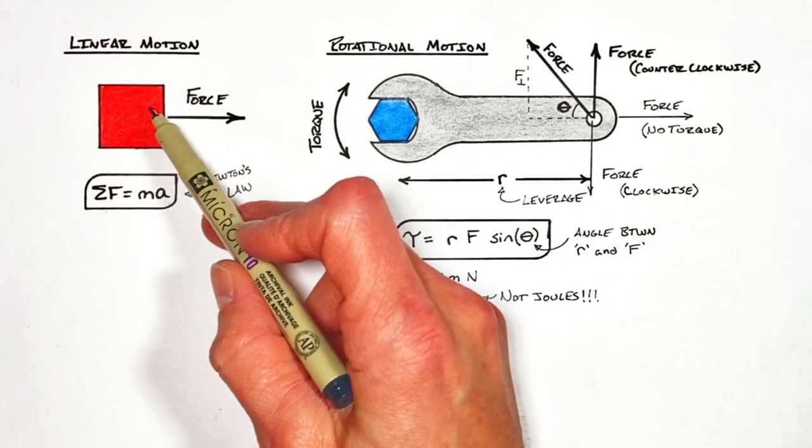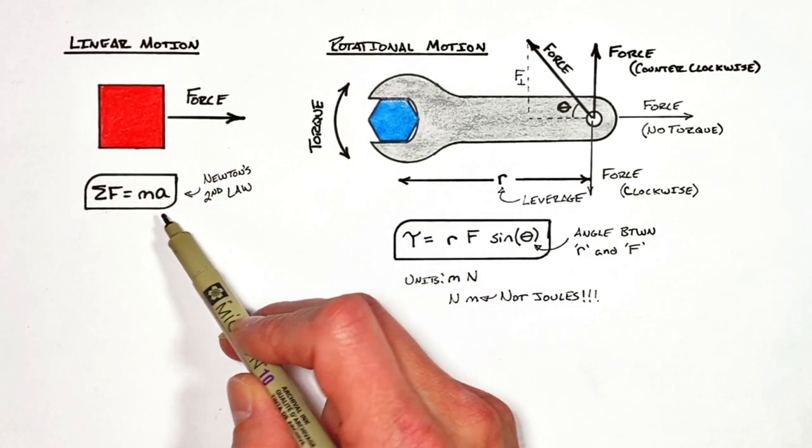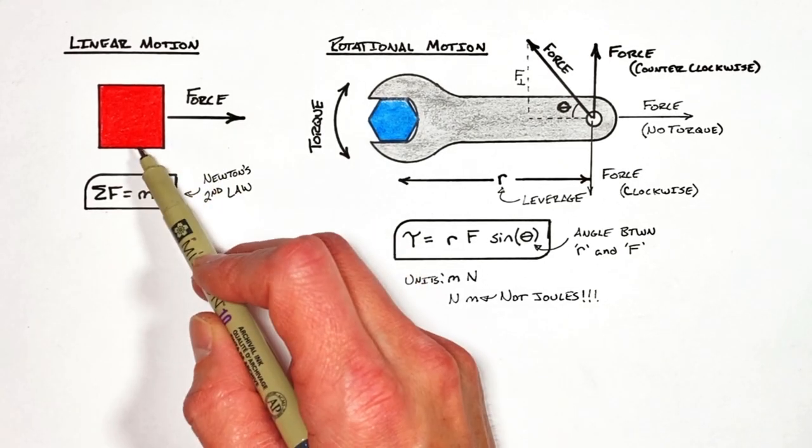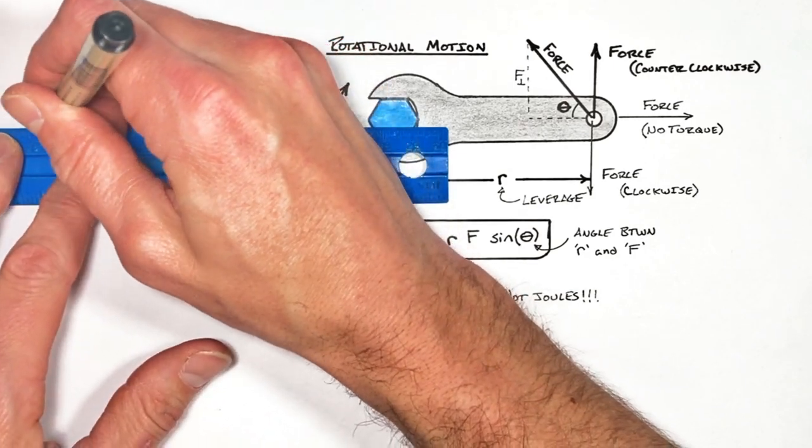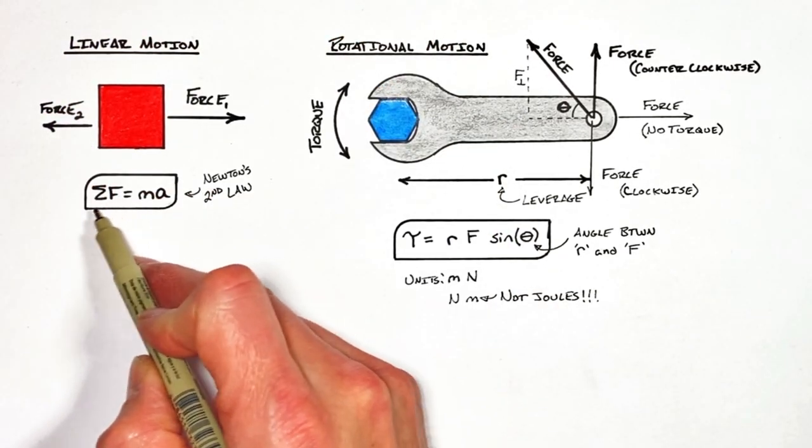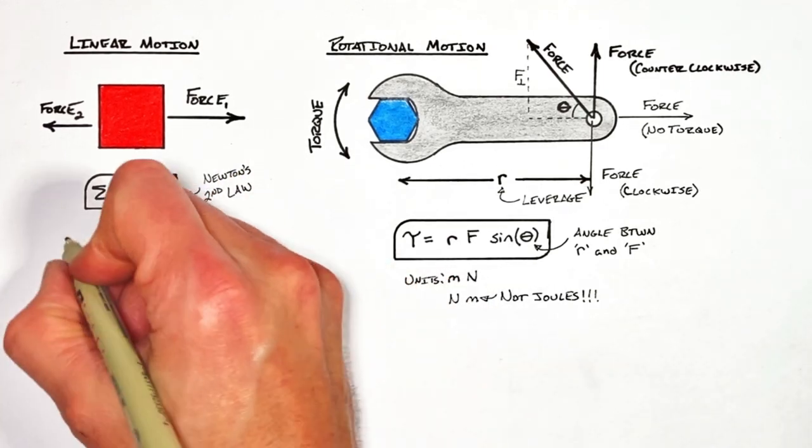Now going back over here to our block and Newton's second law. Know that the sum of all forces equals ma. Now if we have multiple forces acting on an object, it's the sum of those forces which causes the mass to accelerate.